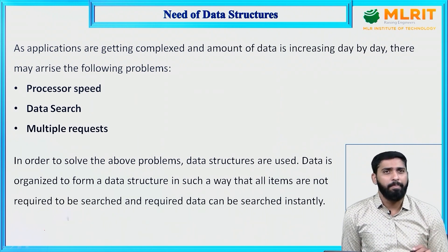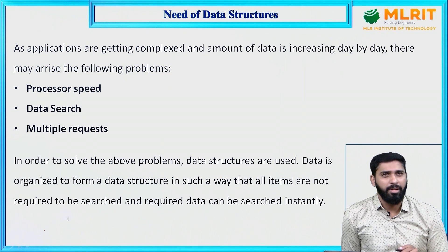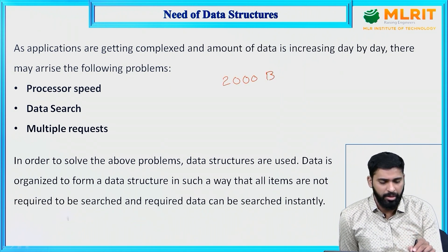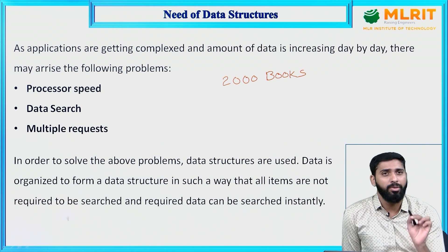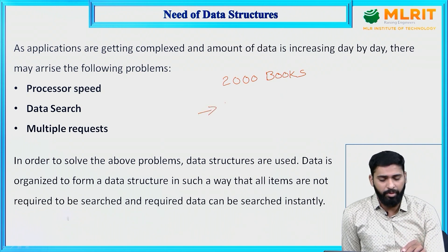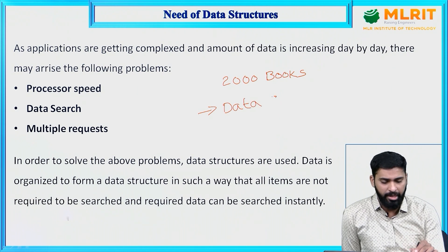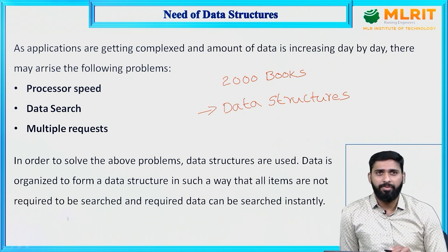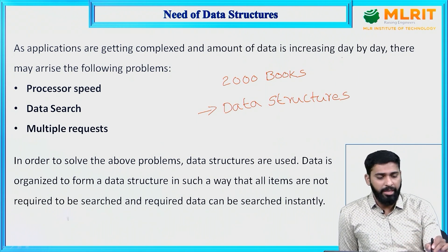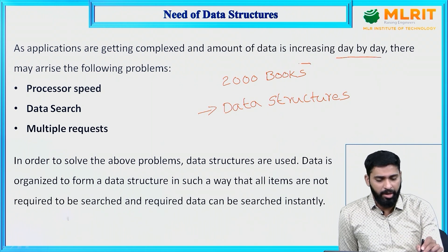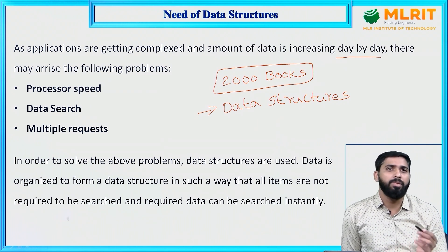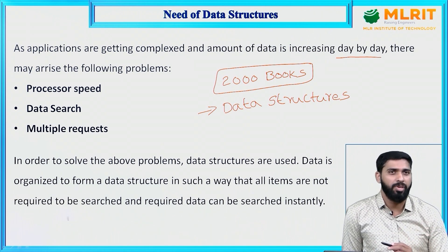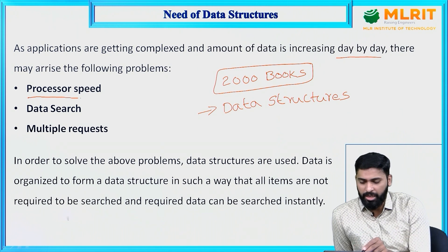Consider the library example. In our library, we have 2000 books. The amount of data is increasing day by day, meaning we have a huge amount of data. What are the problems we face if there is no data structure concept? The first one is processor speed — in a library management system, to retrieve the data, the processor will execute the program, but with a huge number of books to search, it takes much more time to process the data.